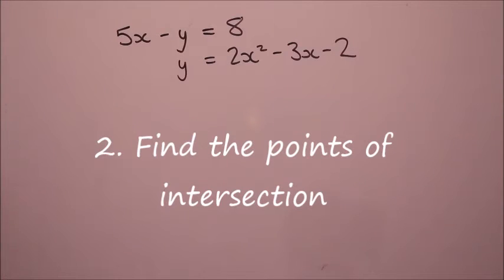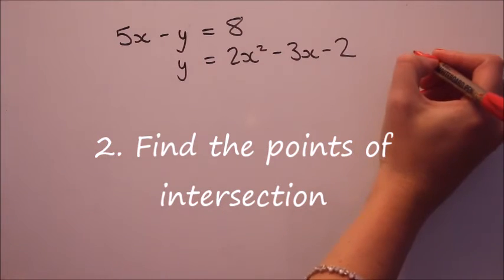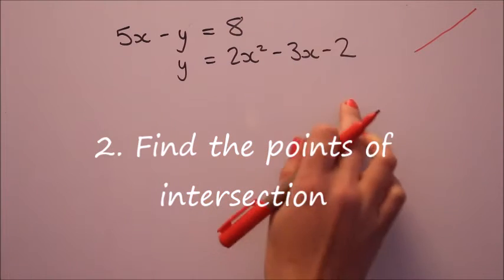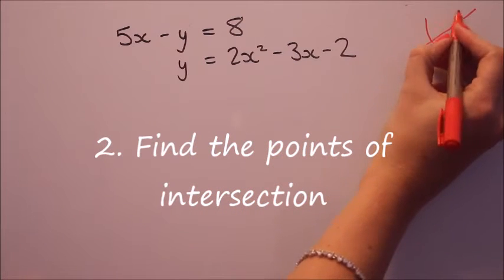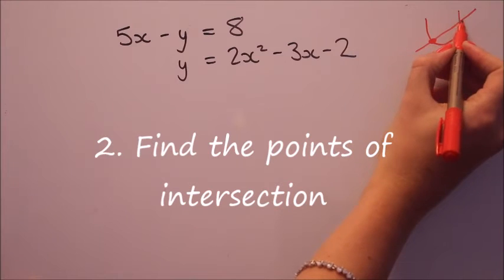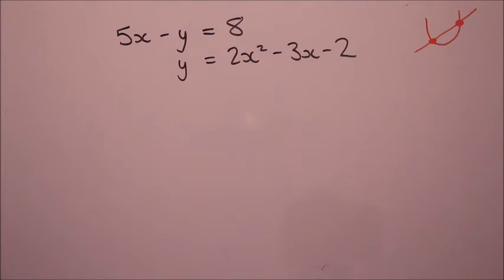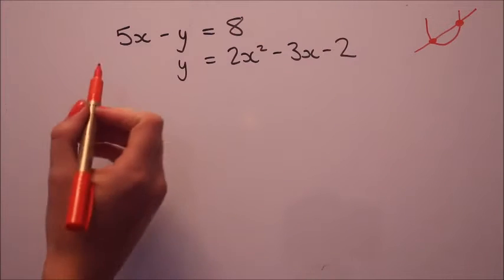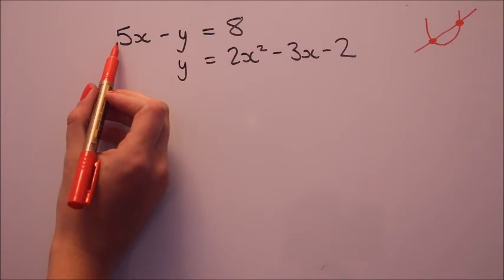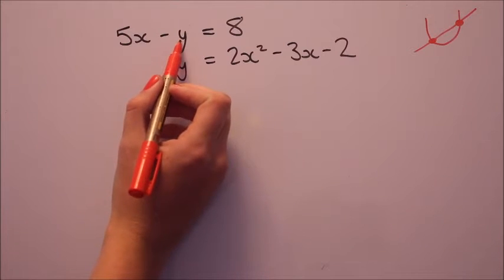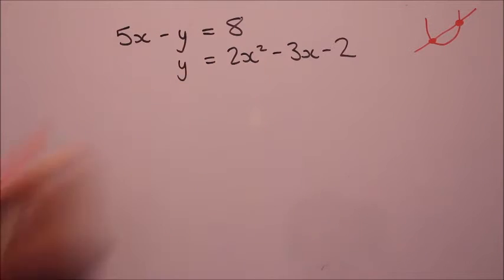This second example is a little harder. They're not both linear this time. The first one is linear, so that's going to be a straight line. The second one there is a quadratic, so that will be a parabola shape. So if they do cross, it will be a maximum of twice. Again, we're going to use the substitution method. It's best to rearrange the linear equation to get y equals or x equals, probably y here because it's on its own, and substitute it then into this equation.